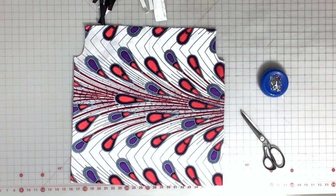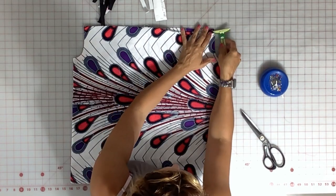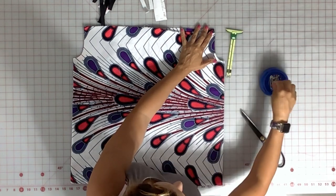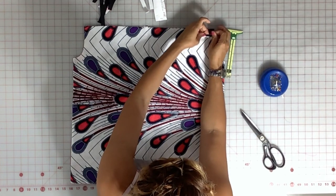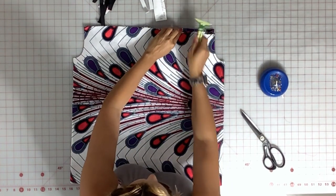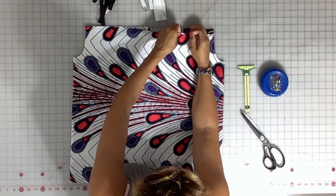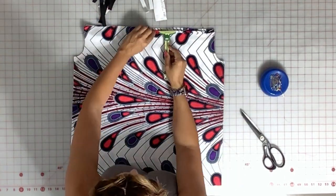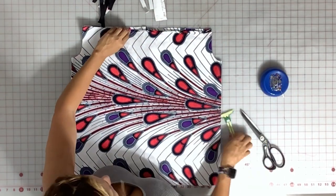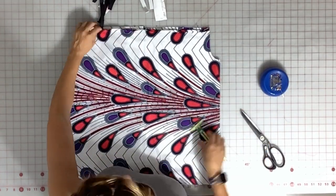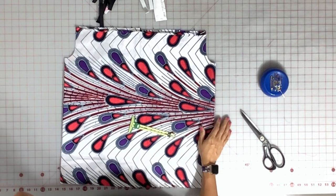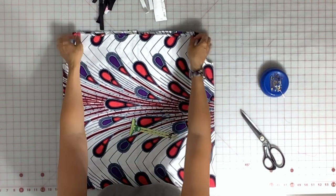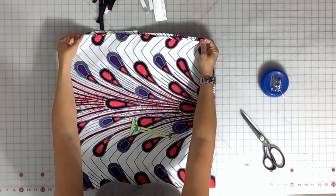Now we're going to make casings for our elastic. So fold over the edge on your front by a quarter inch and pin that in place. We're going to fold it a quarter inch all the way across the top edge. Because our next step is actually going to be to press this down. And then we're going to fold it over again to create the casing. So now that we've got our quarter inch done, let's go ahead and press that.